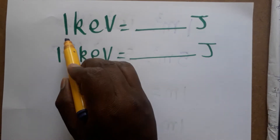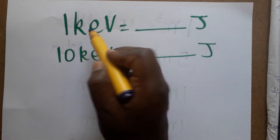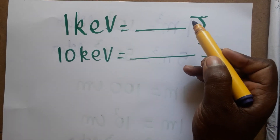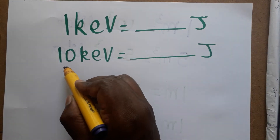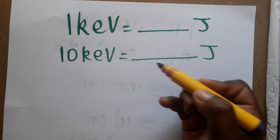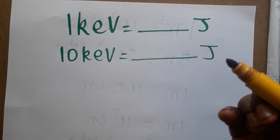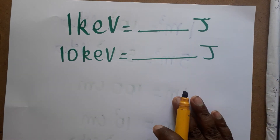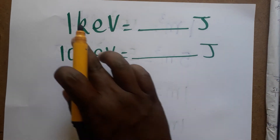Today we are going to learn how to convert 1 kilo electron volt to the joule. For example, 10 kilo electron volt is also going to be converted to joules. If you like my channel, please subscribe.